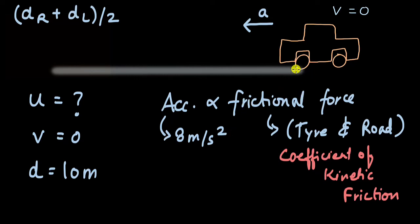Because most of the tires and most of the roads are made of the same material, right? Most of the time. So we can say approximately this is 8 meters per second square.